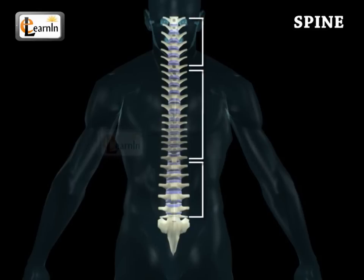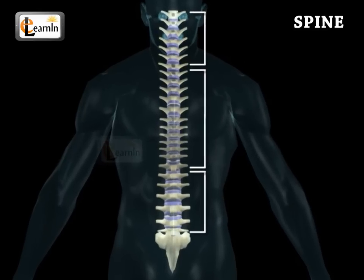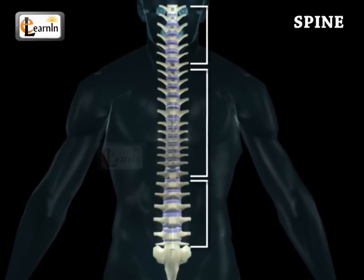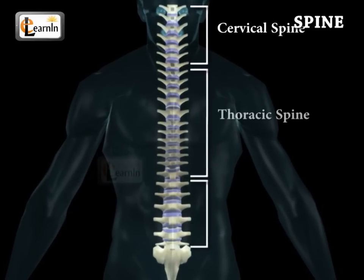Broadly, the three main sections of the spine include the cervical spine, thoracic spine, and the lumbar spine.